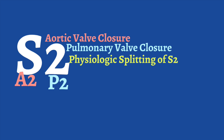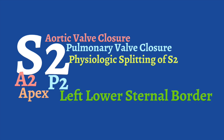A2 precedes P2. A2 is more prominent over the apex of the heart, but can be heard at the left sternal border, especially at the second intercostal space. The beat that quickly follows A2 is P2, and it can also be best appreciated at the left sternal border.